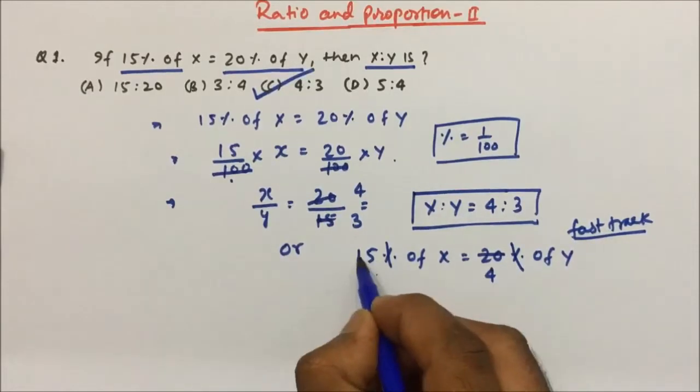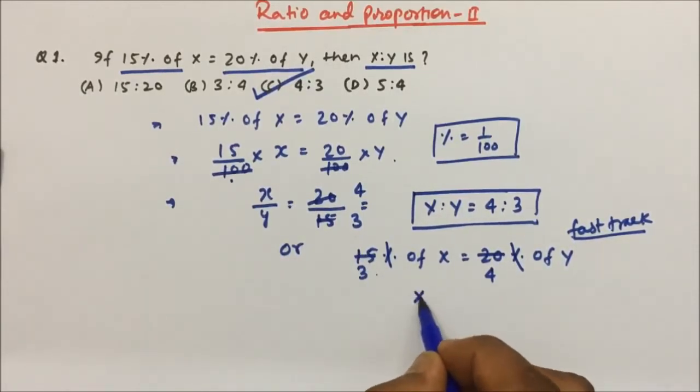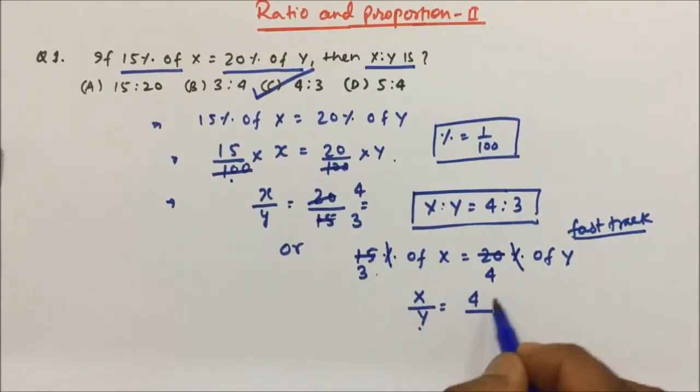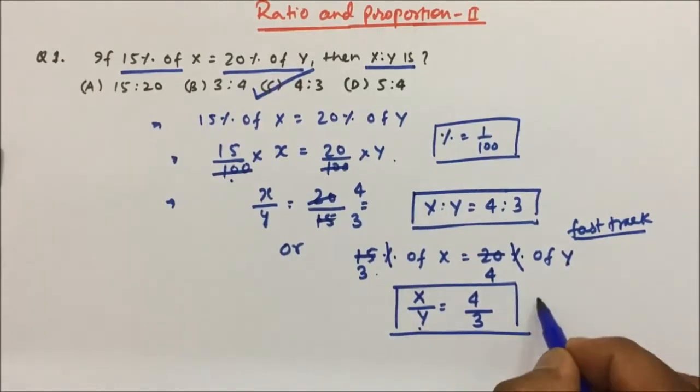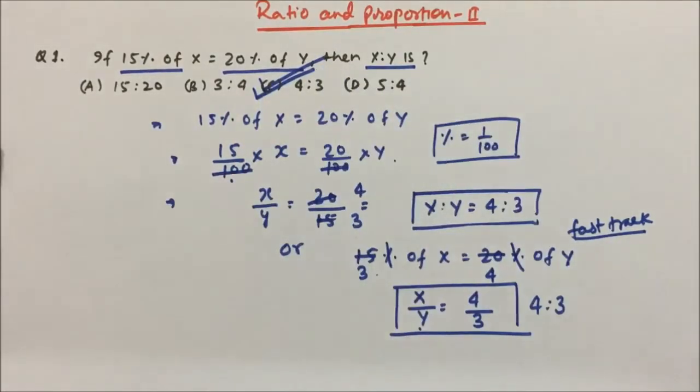Now 15 into x and 20 into y. x divided by y - y I will bring to the left side, 20 and 15 to the right side denominator. So x by y equals 4 to 3, that means ratio will be 4 to 3, and that is nothing but option C.